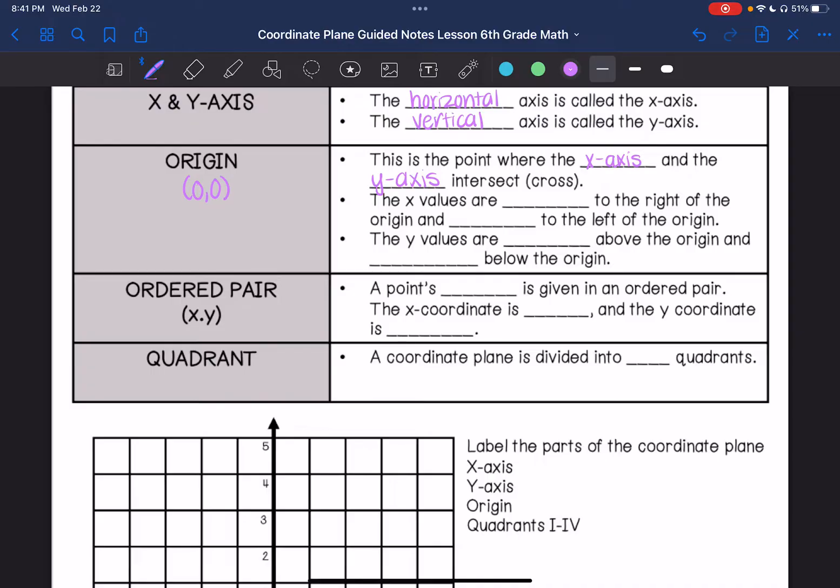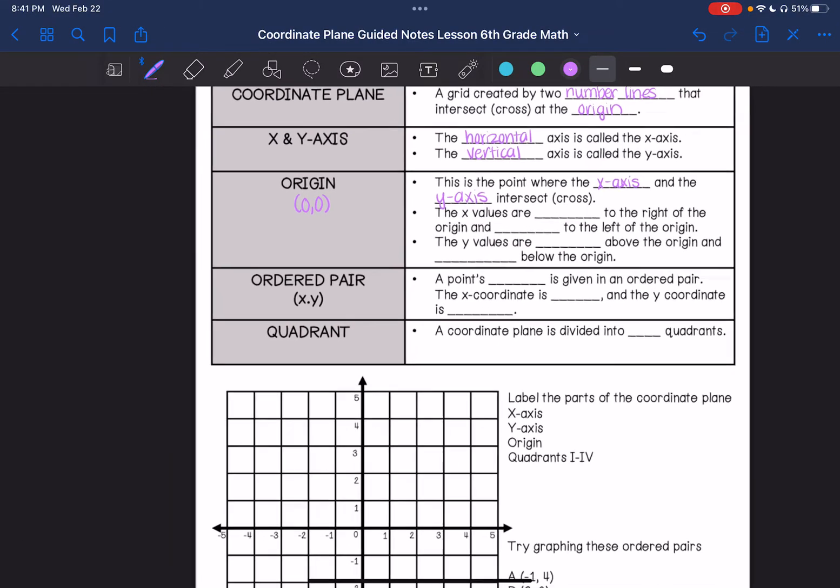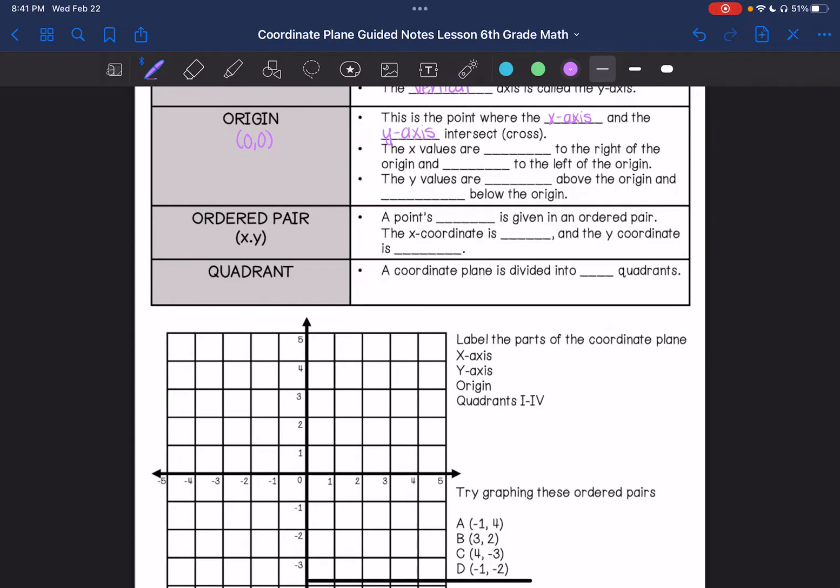All the x-axis are positive to the right of the origin and negative to the left of the origin. So positive to the right of the origin and negative to the left. And then when we are looking at the y values, they are positive above the origin, negative below the origin.